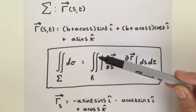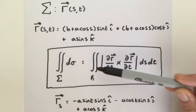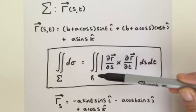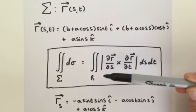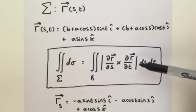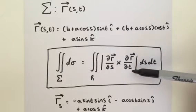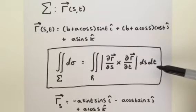And this is equal to the double integral over our region r, which is defined by s and t, which was s and t both going from 0 to 2π radians, of the magnitude of the cross-product between the partial derivative of r with respect to s and t multiplied by ds dt.